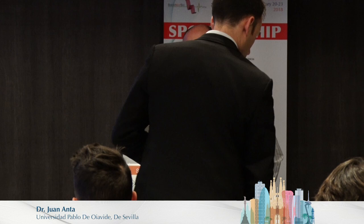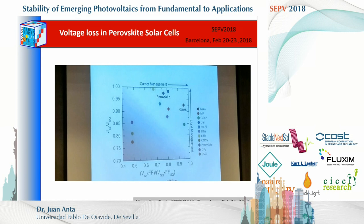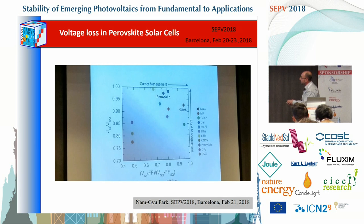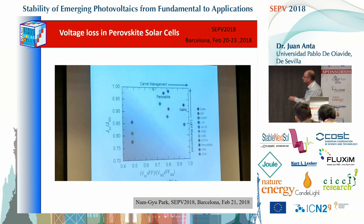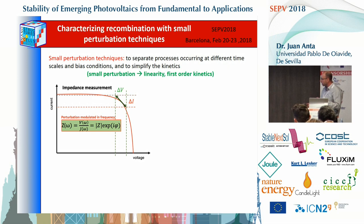I'd like to start by reflecting on a slide that Professor Park showed the other day at this conference. The learning from that plot is: whereas in a perovskite solar cell in terms of short-circuit photocurrent we are very close to the theoretical limits, in terms of voltage there is still much room for improvement. That means improving current management — making transport faster and making recombination slower. We are concerned about recombination in perovskite solar cells, and our approach is to use small perturbation electronic techniques.